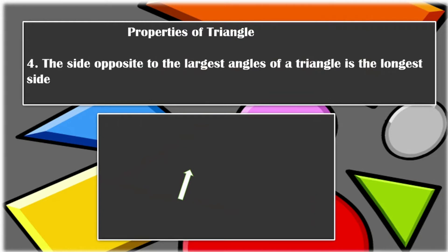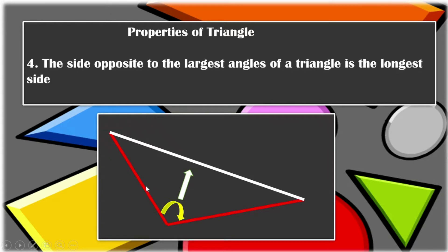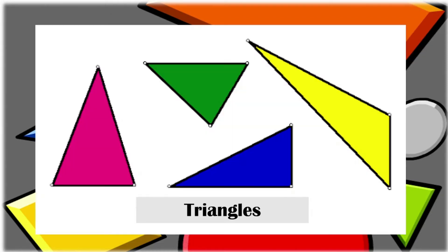Fourth, the side opposite to the largest angle of a triangle is the longest side. As you can see, this is the angle, and the opposite side of this angle is the longest side. These are examples of triangles in different shapes and forms, but the sum of every angle is 180 degrees.